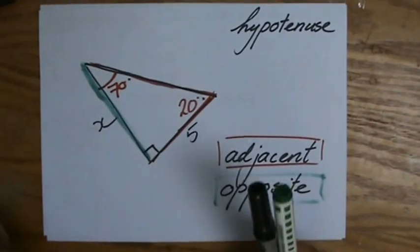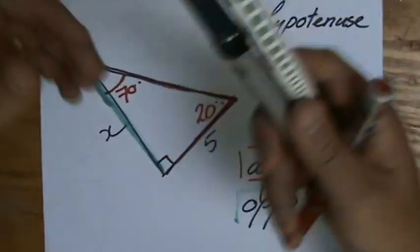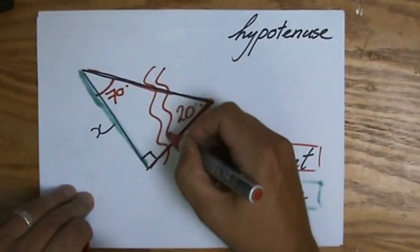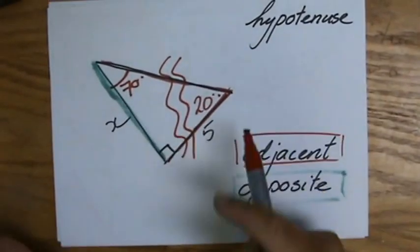Which side is opposite of me? Which side I don't see? Which side is not touching me? It's on the other side of the river, if you like. You can draw a little river here. If I'm standing in my 20 degrees angle, that makes x opposite of the river. 5 is my adjacent.